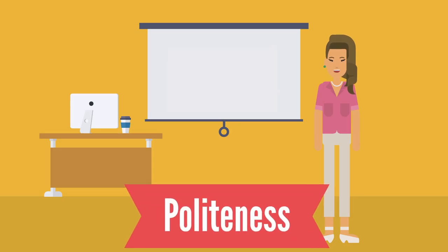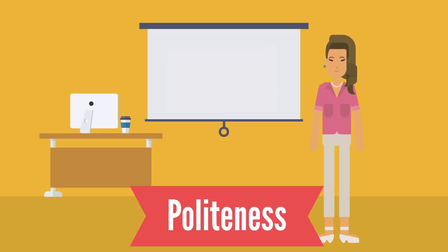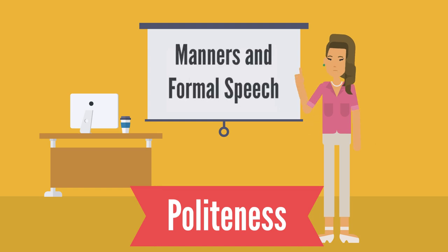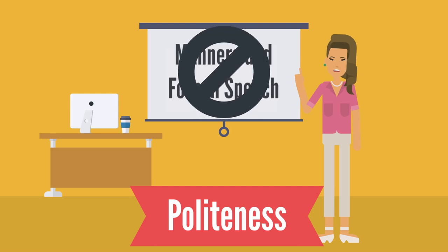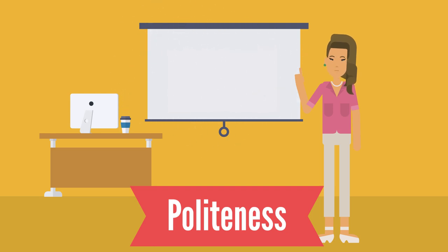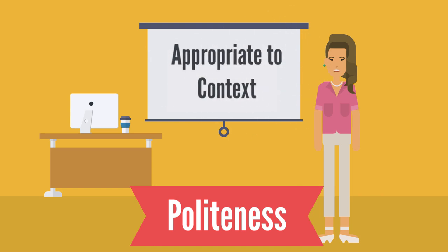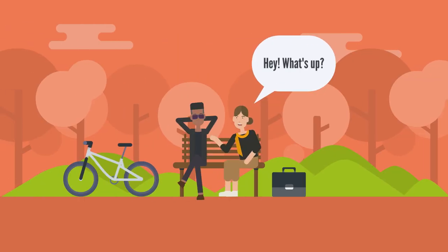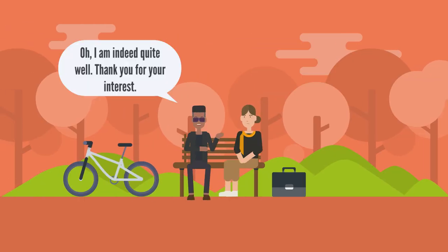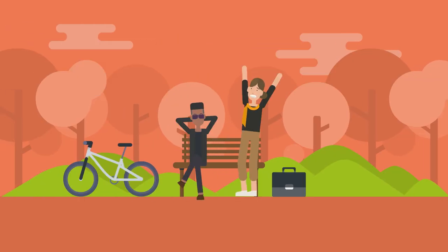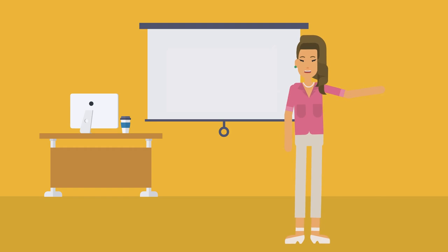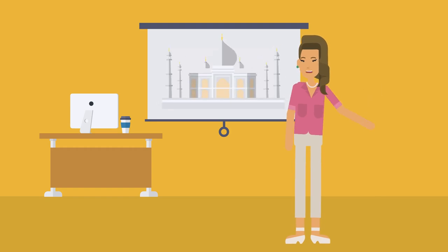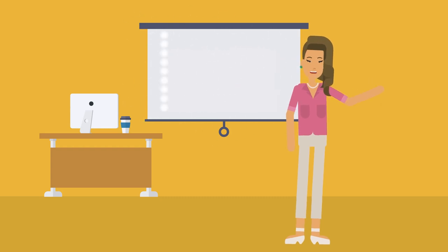What do you think about when you think of politeness? If you are like a lot of people, you might think of manners and formal speech. But instead, when you hear the word politeness, think of it as just using the most appropriate language for any given context. For example, less formal language would be more polite with a close friend. What is polite is defined both by the cultures in which people are communicating as well as the people having the conversation.